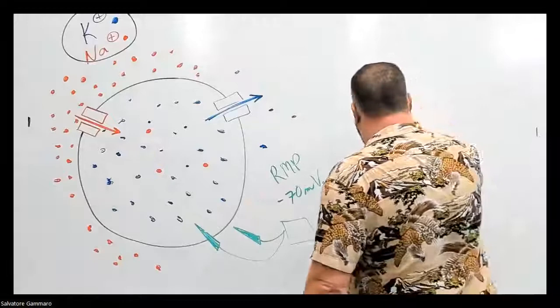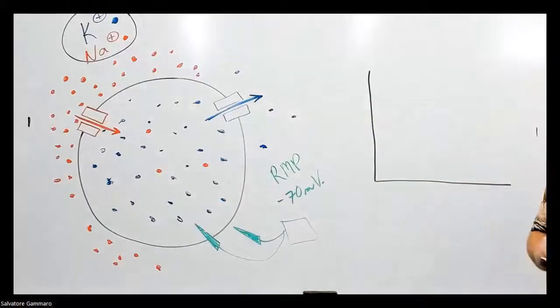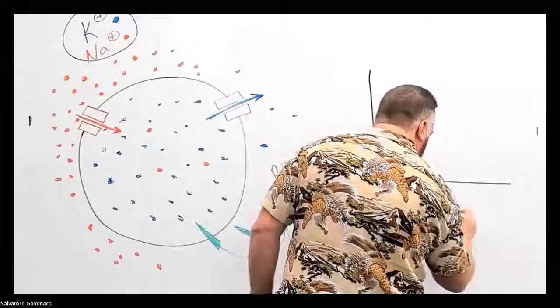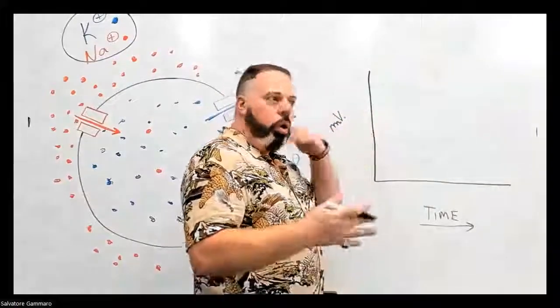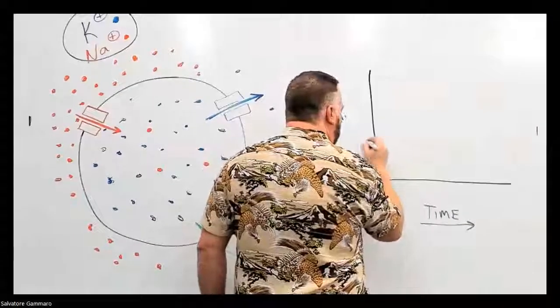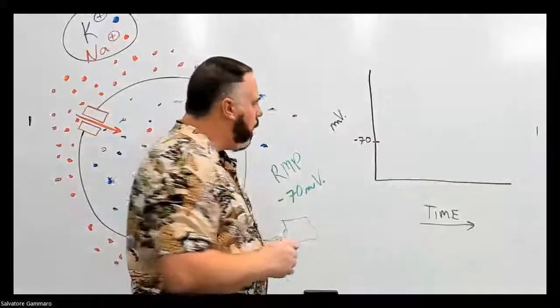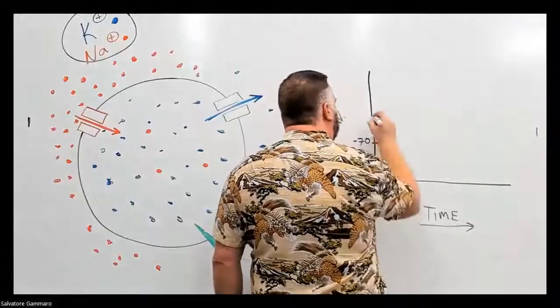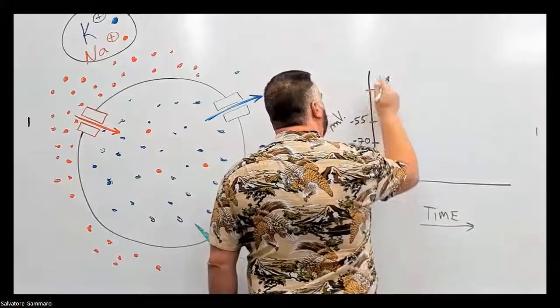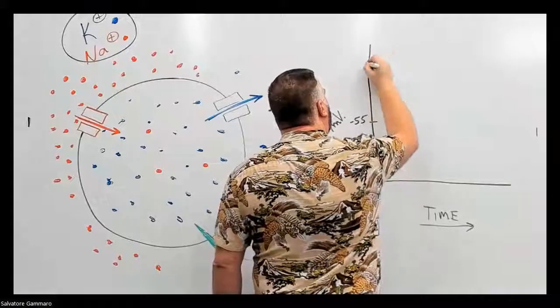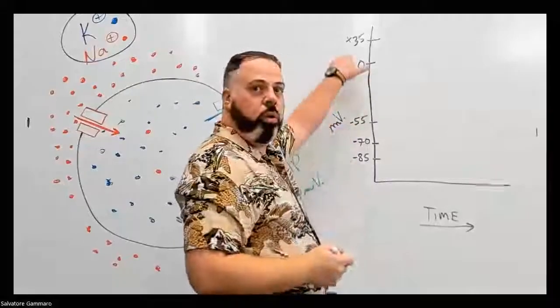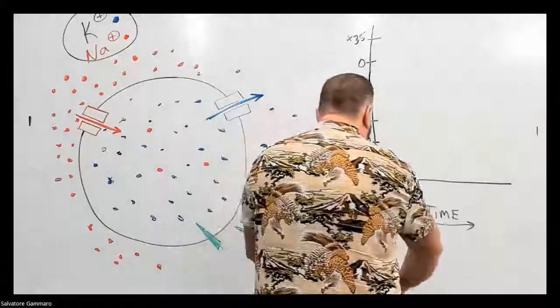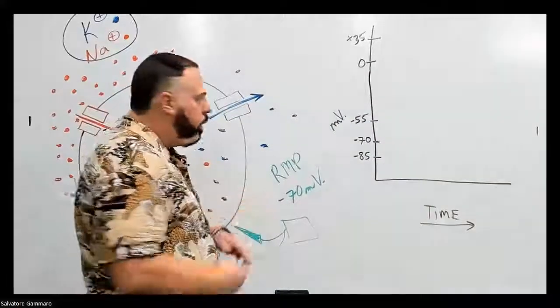Now let's build our graph. The x-axis is time, and the y-axis is millivolts. I'm going to put some numbers: negative 70 millivolts here, and I'm going to throw in negative 85 — numbers I'll refer to in a bit. The resting membrane potential is negative 70. The cell is not being stimulated right now.